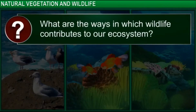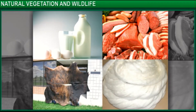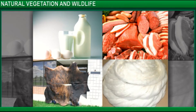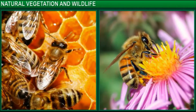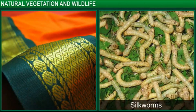What are the ways in which wildlife contributes to our ecosystem? Animals provide us with milk, meat, hide, and wool. Insects like bees provide us with honey to eat and help in pollinating flowers. Silkworms provide us with silk — they feed on the leaves of the mulberry tree and are dependent on it for survival.